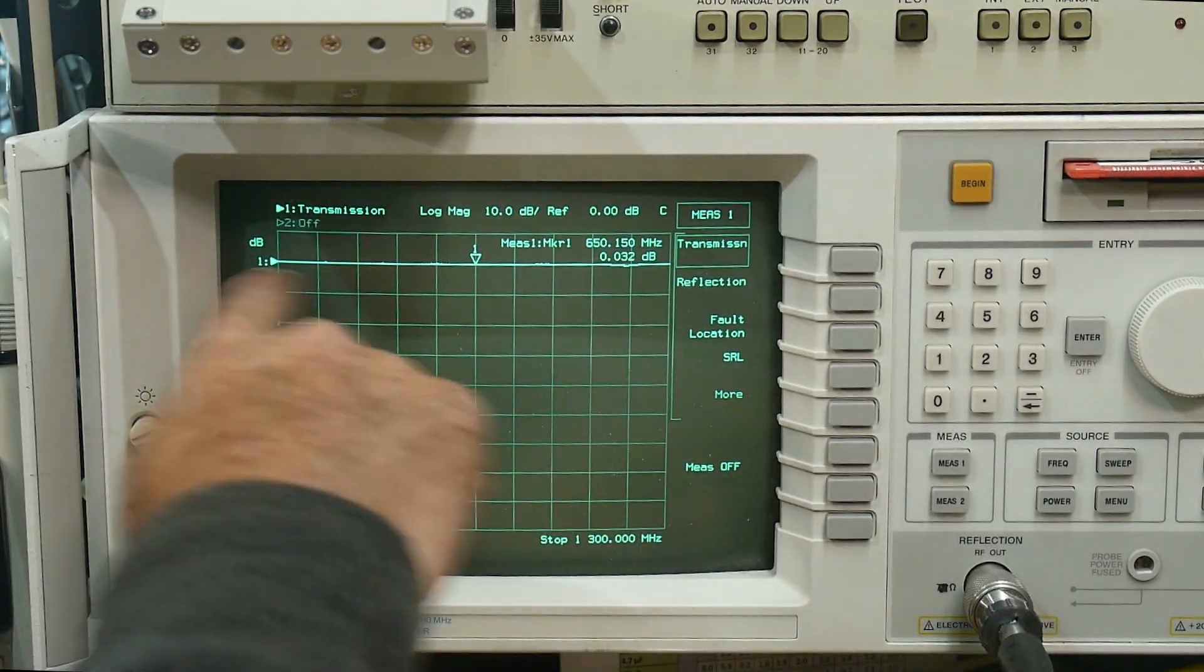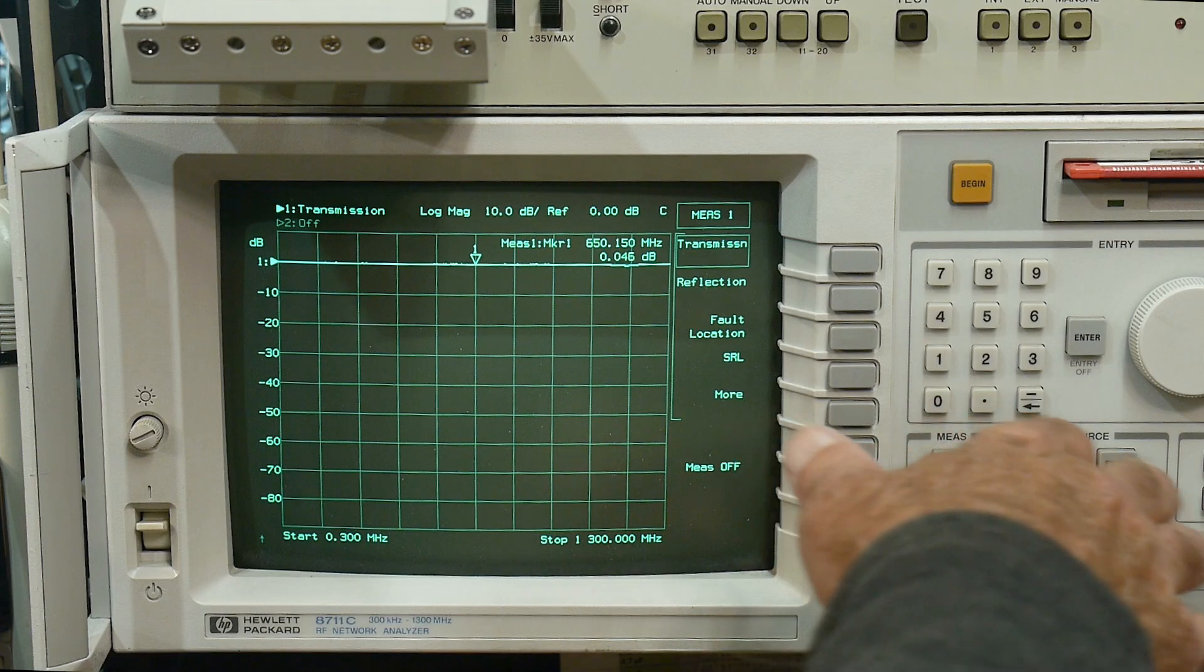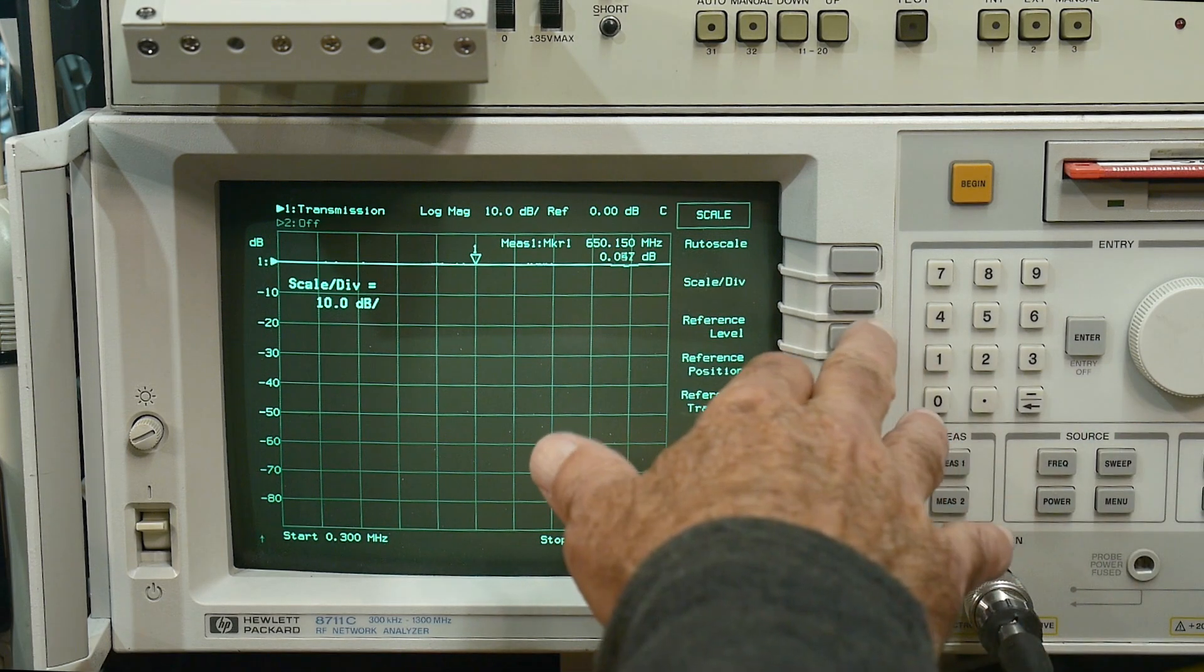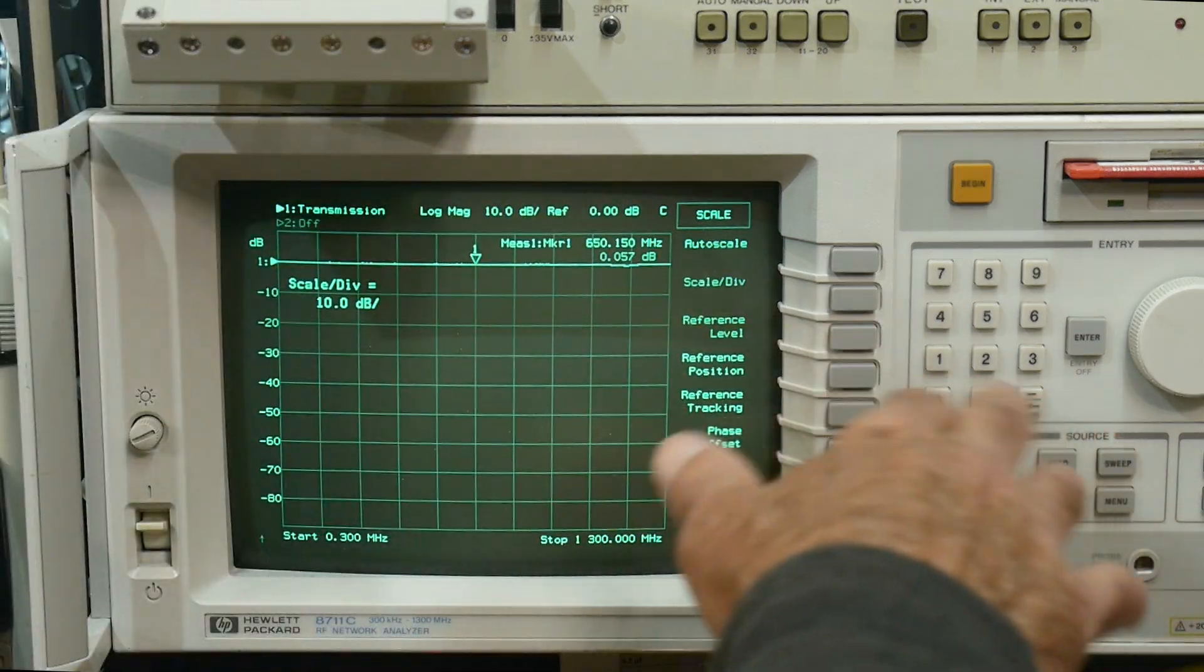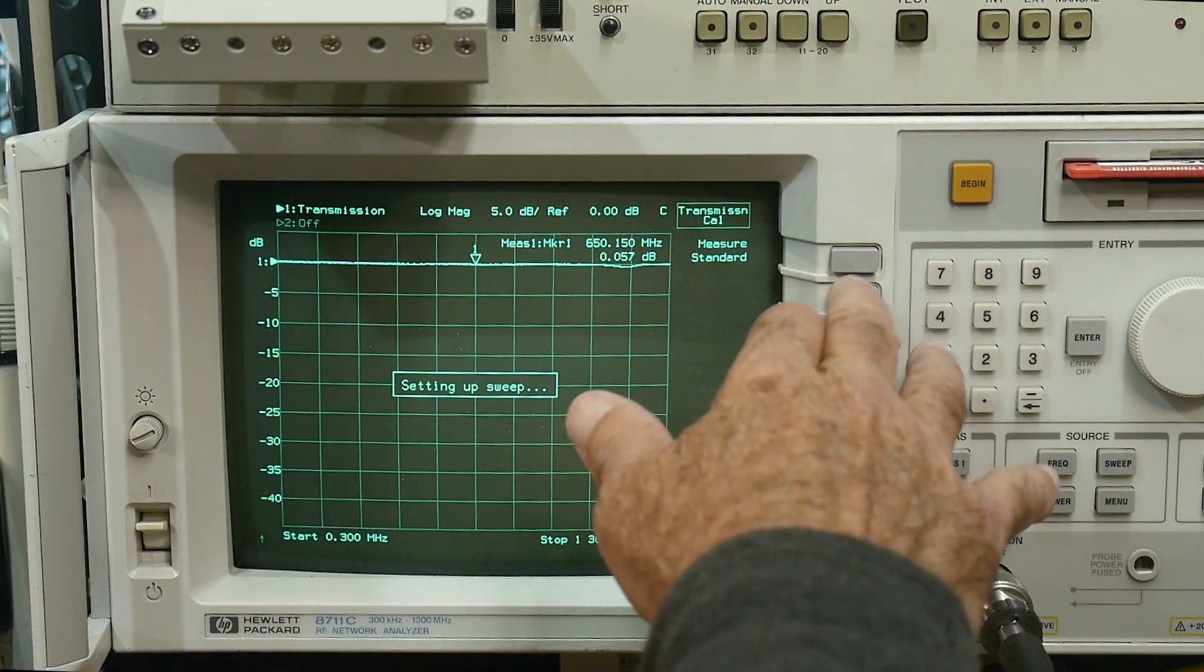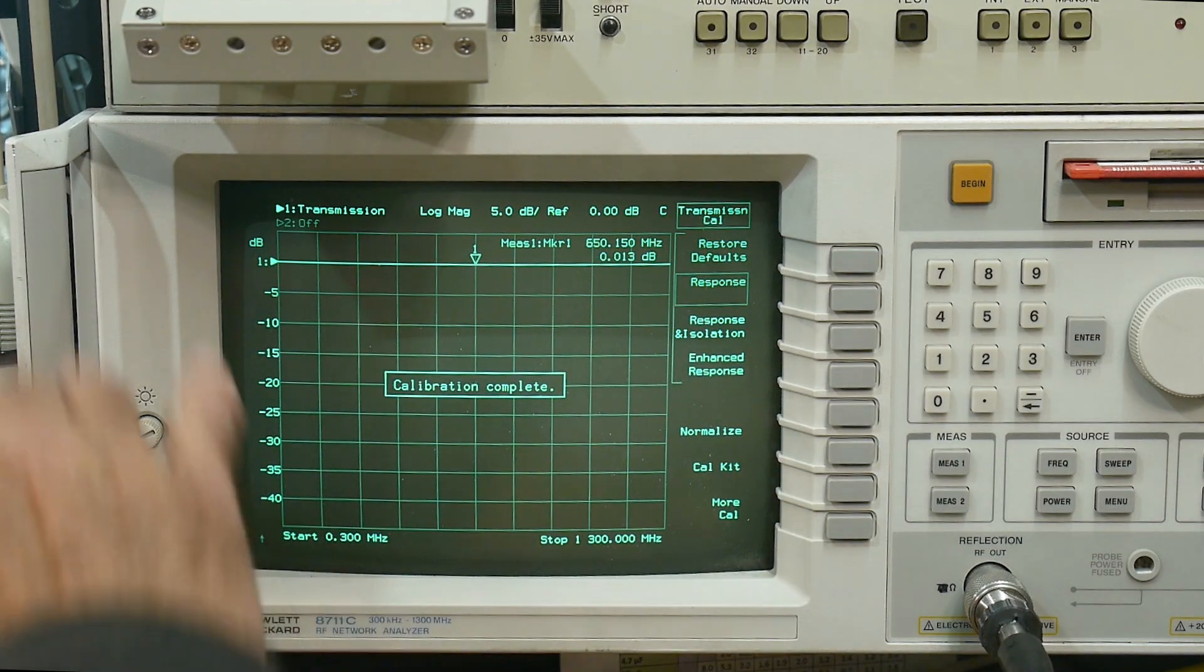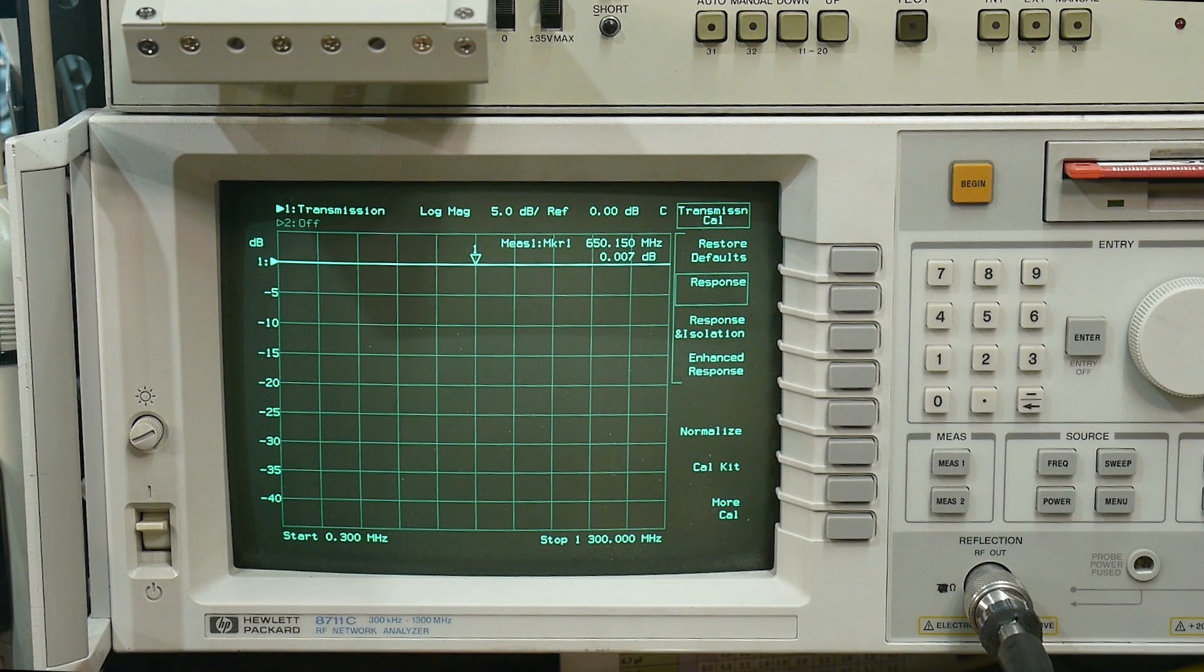All right, so this is 0 dBm and we're at 10 dB per step. So let's change the scale here to 5 dB per step and let's just kind of zero things out here. There we go. All right, so we have a nice 0 with 0 attenuation.